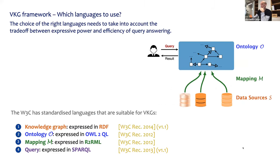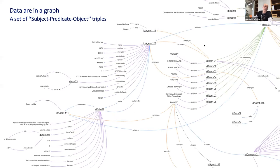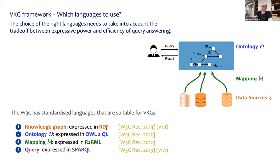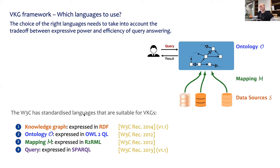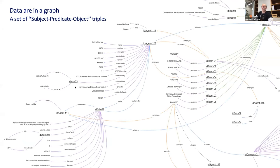Let me repeat the main ingredients. We have the knowledge graph — the ontology plus the data graph — the mappings, and the query. It is part of our job to decide which formal languages are most suited to express these three ingredients. We are relying on standards. The knowledge graph is represented in RDF. The ontology is an OWL2QL ontology, a profile defined by the W3C. Mappings are in R2RML, also a W3C standard. And the query language we use is SPARQL.